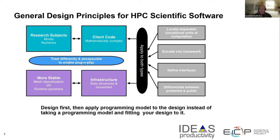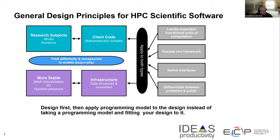A couple of general principles to think about: separate your code into distinct chunks. The parts most often the focus of research are the models you're implementing and the numerical aspects — client code that is mathematically complex and changes in response to the first block. Other aspects of the code are more stable: once you've settled on a mesh discretization technique, you probably don't need to worry about that much. IO, runtime parameters — those aren't frequently changing things.